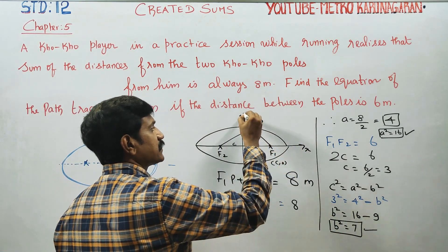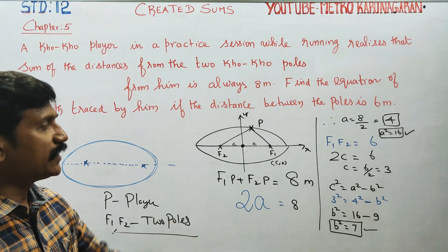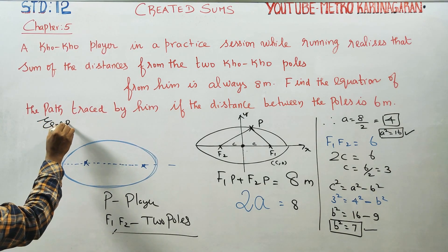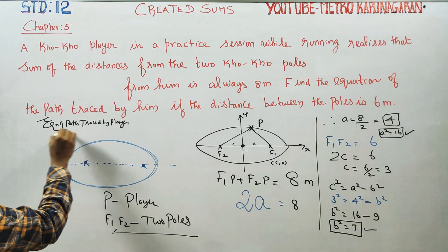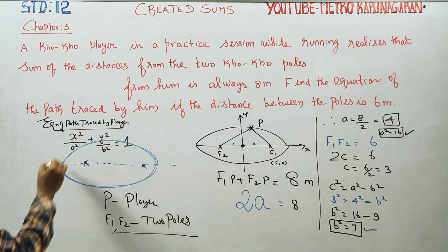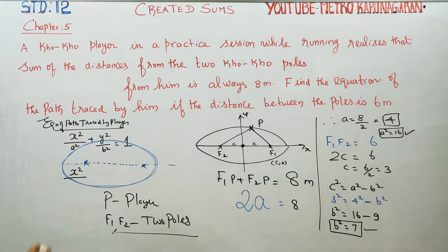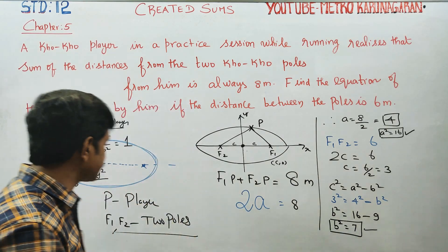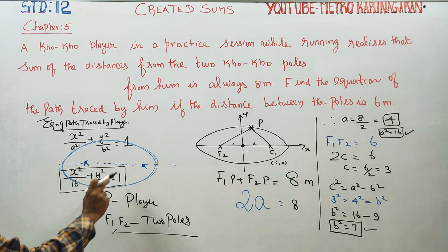Now I am ready to write the equation. The equation of path traced — final answer. The player path traced formula is x square by A square plus y square by B square is equal to 1. So the final answer is x square by 16 plus y square by 7 is equal to 1. This is the final answer for this problem.